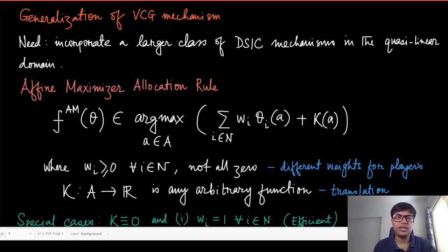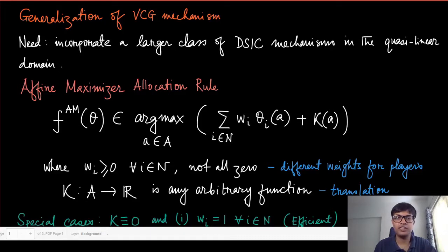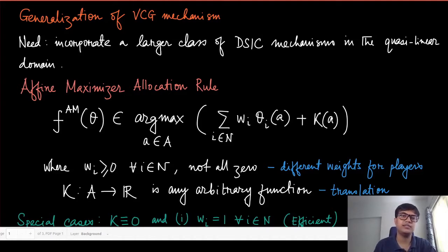Now that we know the VCG mechanism in quite some detail, along with its advantages and disadvantages, this is the right time to look at a generalized version of the VCG mechanism. The VCG mechanism essentially picks the efficient allocation, which is the allocation that maximizes the sum of the values of all the agents. One way of generalizing this is to incorporate some weights and some function which translates the allocations.